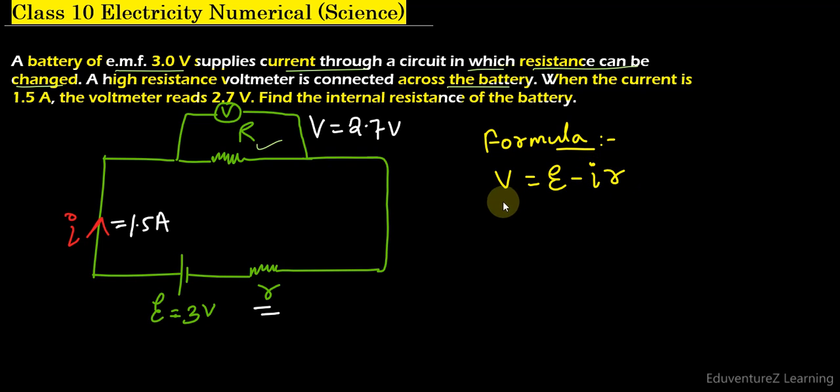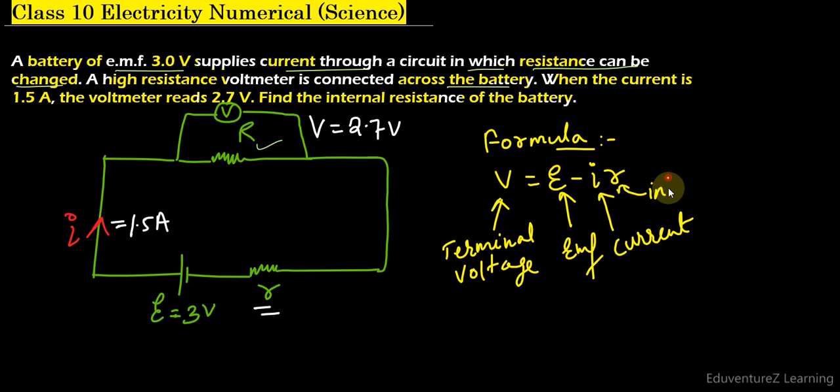Where V is the terminal voltage or you can say it as potential difference or simply voltage. So this is terminal voltage, this one is the emf, this is current, and this is internal resistance.